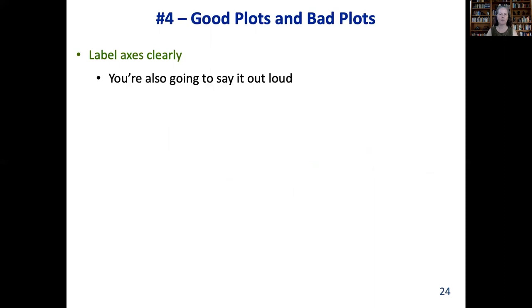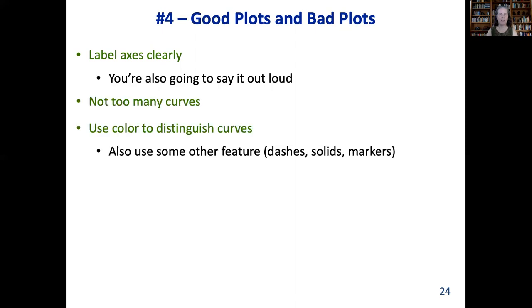Let's talk about plots. You need to label the axes clearly. You're going to say them out loud, but you also need to have them labeled. Don't have too many curves, and it's a good idea to use color to distinguish curves, but also distinguish them some other way, using dashes or dots or so forth. If you know that you're going to refer to something, then mark it with an arrow. Legends are not always the best way to label curves, because the viewer's eyes must go back and forth. So let's see some examples.